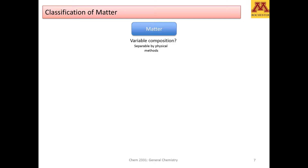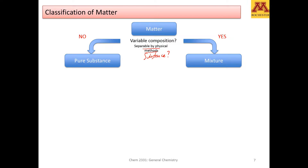For the classification of matter, the first question we need to ask is whether the specific matter has variable composition — in other words, is it a substance? A substance is matter that has a common composition throughout. If I apply physical methods such as boiling, freezing, filtering, or a centrifuge, can I separate something? That's the difference between a pure substance and a mixture. If you cannot separate it by physical methods, then we're talking about a pure substance. However, if you can separate it, we call that a mixture.